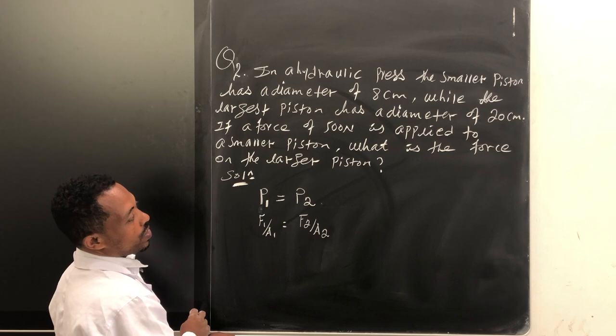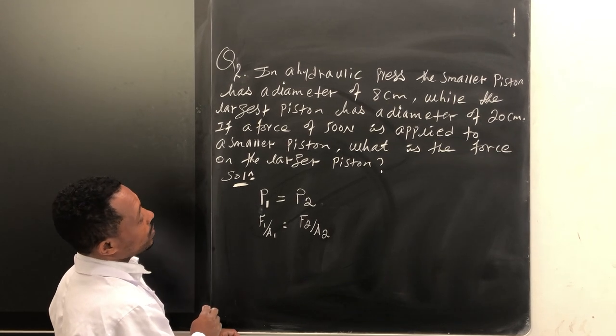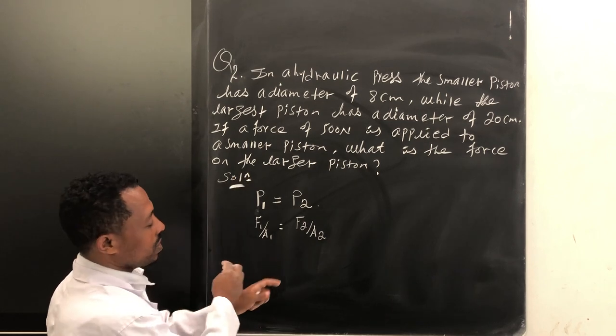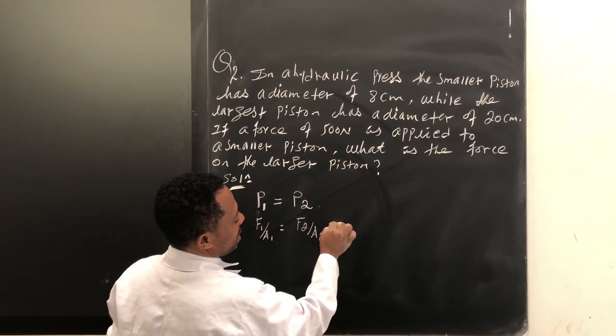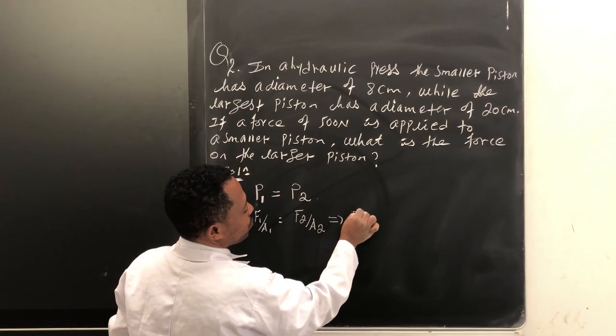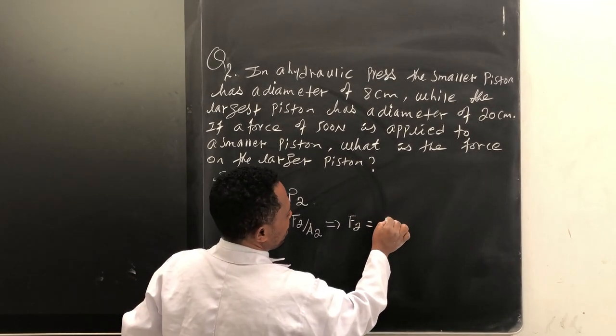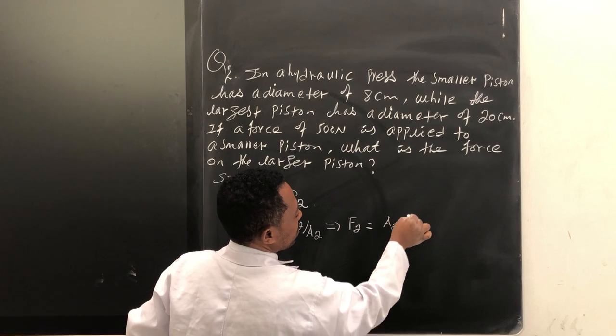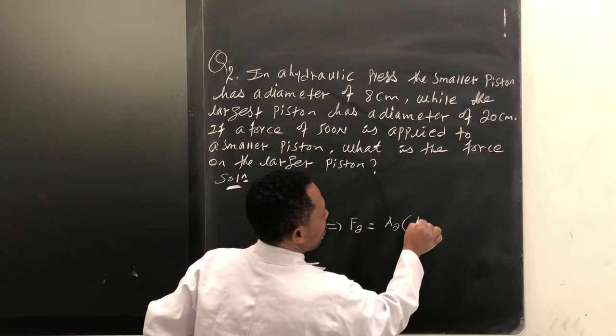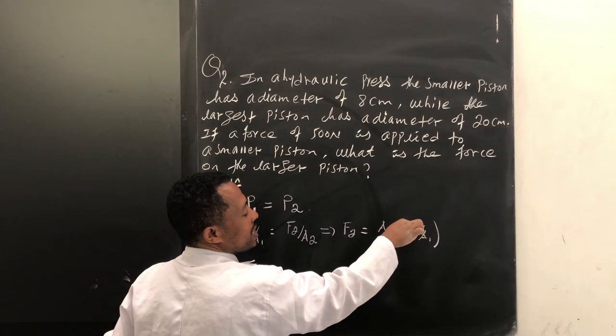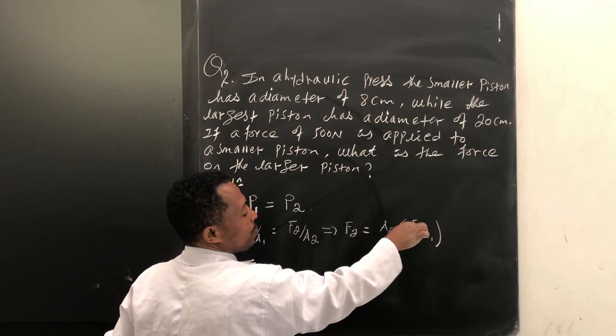But what we requested, what is the force of the largest piston? This implies that, simply F2 is equal to A2 times F1 over A1. This is the pressure within the piston one.